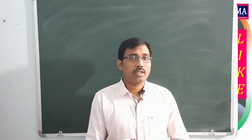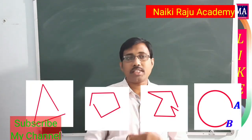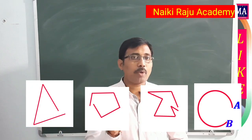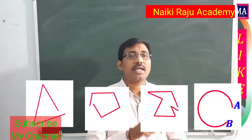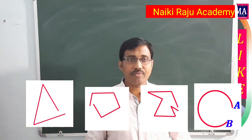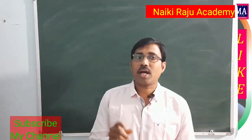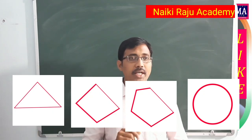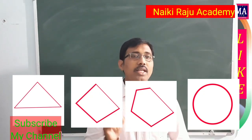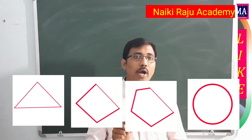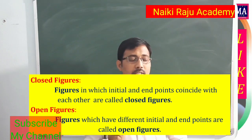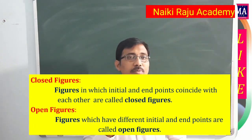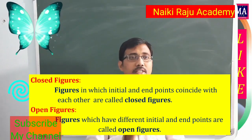Observe these four figures. In these four figures, the initial point and terminal point are both different — the initial point and end point are different. These four figures are called open figures. Next, observe the other four figures: triangle, quadrilateral, pentagon, and circle. In these four figures, the initial point and end point coincide with each other. These are called closed figures.